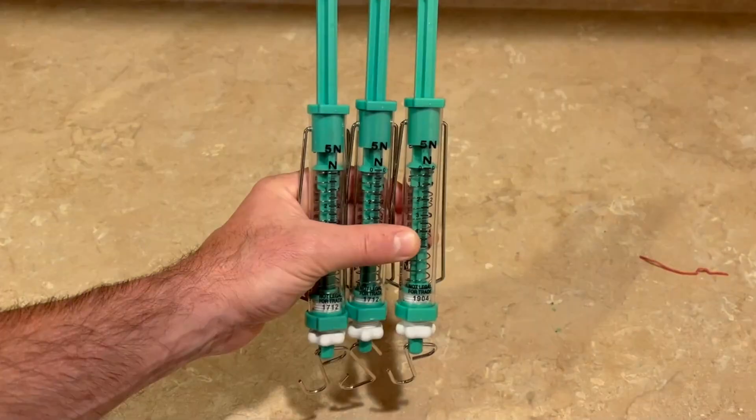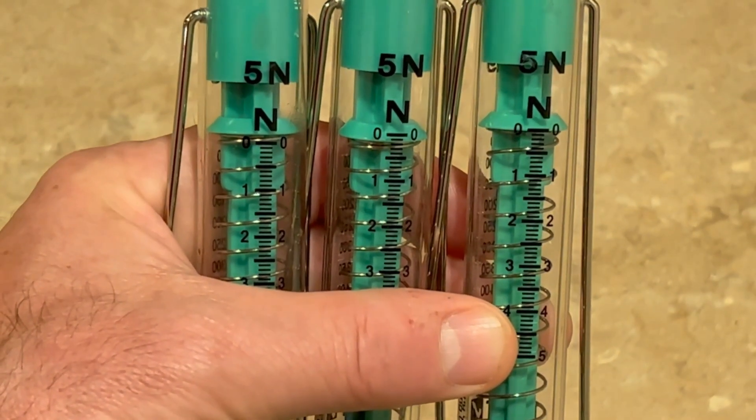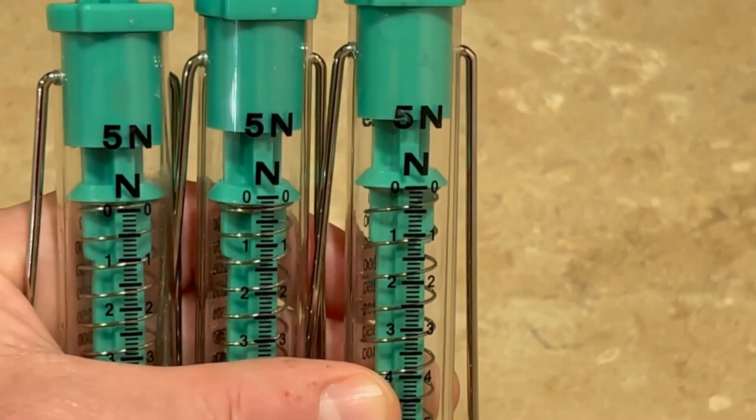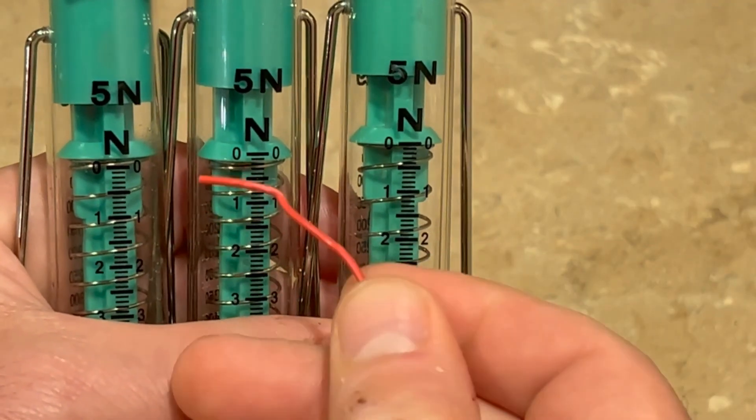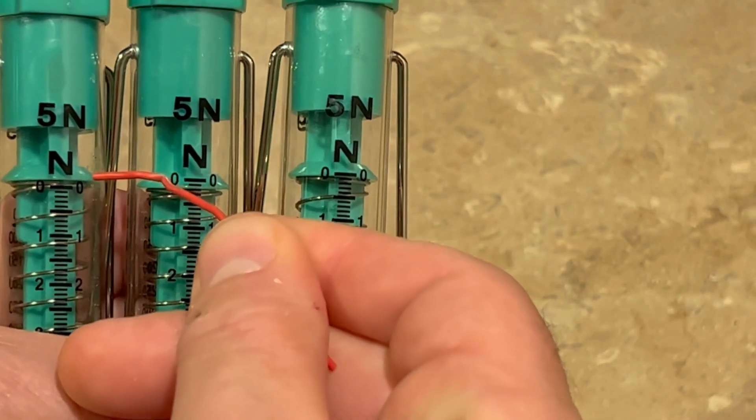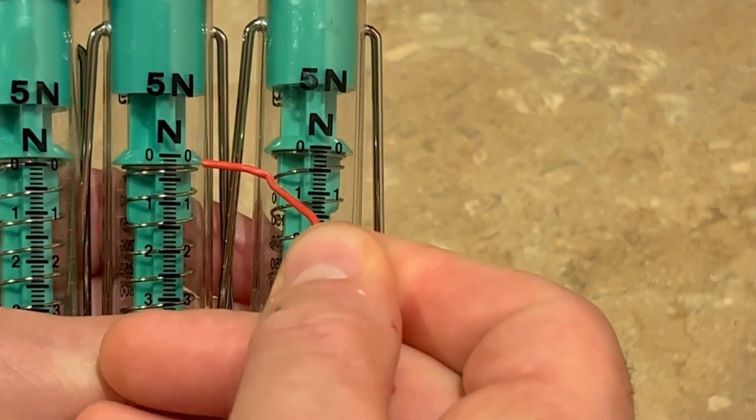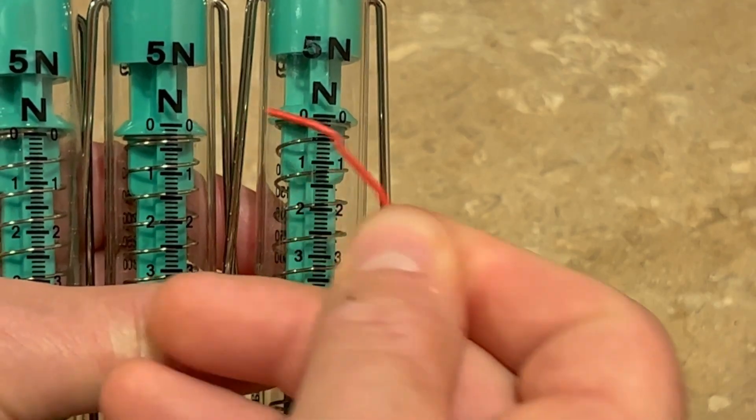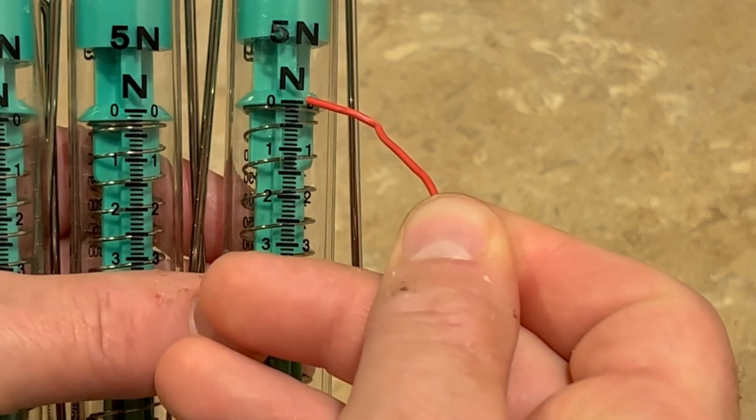Here are three spring scales, all of which still need to be zeroed. Let's see how we can tell. On the left spring scale, the green plunger edge is slightly above the zero mark. On the middle spring scale, it's far below the zero mark, and on the right spring scale, it's just below the zero mark.